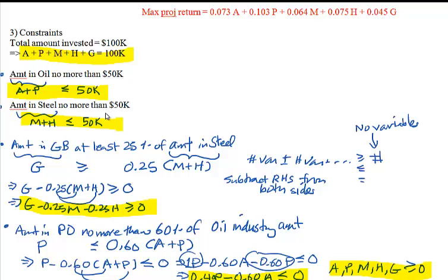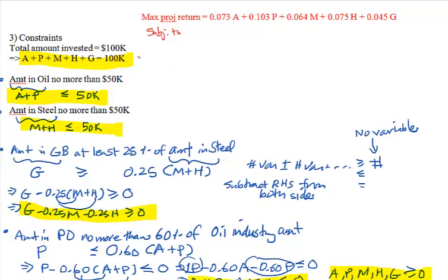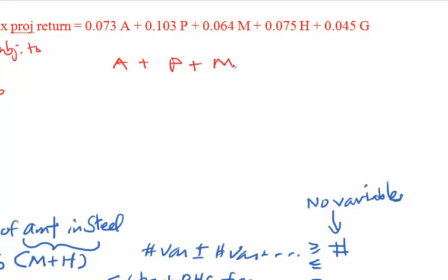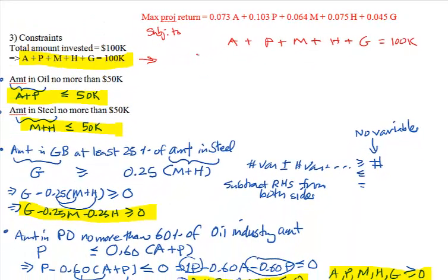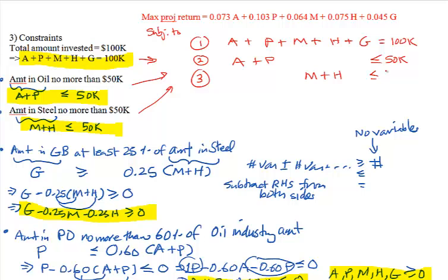Now we'll write the complete linear programming model. The objective function is followed by 'subject to' and the constraints. The first constraint is: A + P + M + H + G = $100,000. The second constraint is: A + P ≤ $50,000. The third constraint is: M + H ≤ $50,000. Note that lining up variables makes it easier when entering into Excel, where each variable gets its own column.